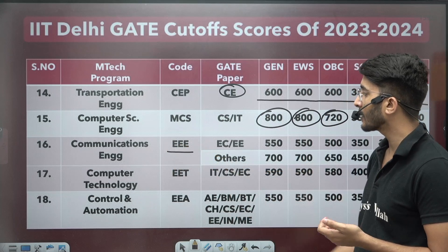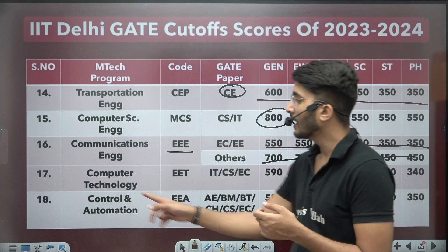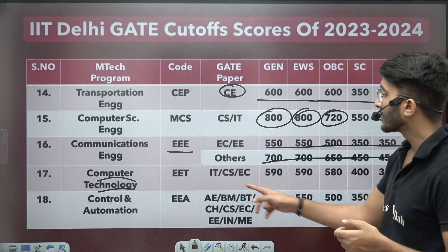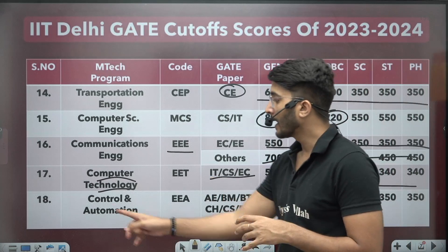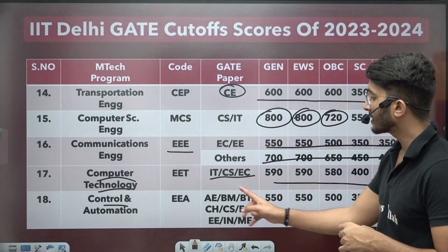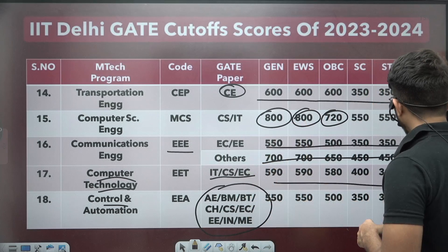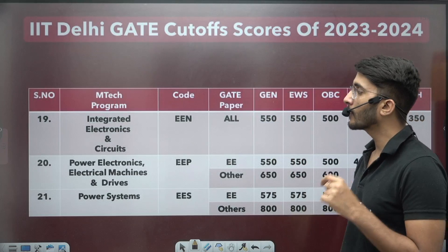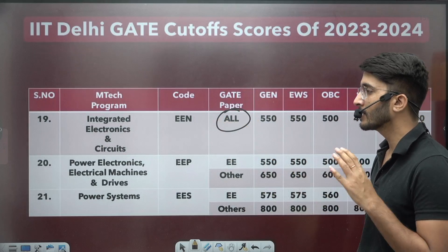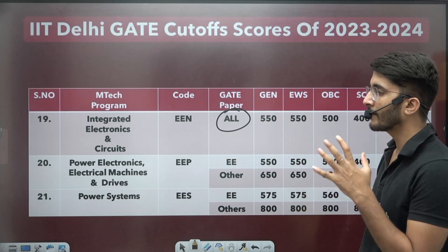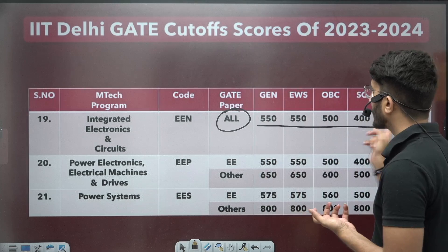For Communication Engineering (EEE branch), different category students are eligible with respective cutoffs. For Computer Technology, IIT CS and EC students are eligible with listed cutoff marks. For Control and Automation, it is an interdisciplinary course joinable from different branches. For Integrated Electronics and Circuits, all GATE paper students are eligible as it is an interdisciplinary course, so every branch student with a good GATE score above the threshold is eligible.